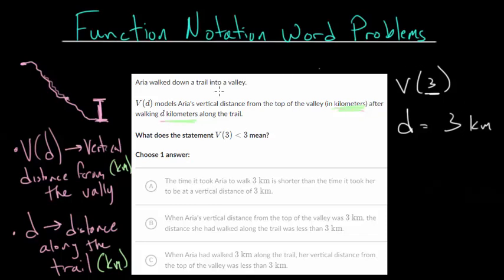So V(3) is basically representing the vertical distance after walking 3 kilometers. Or the vertical distance, let's say this is 3 kilometers there, then V(3) is whatever this height is, this vertical distance from the top of the valley. And they're saying that V(3) is less than 3. So that means that the vertical distance after walking these 3 kilometers is less than 3 kilometers. So this vertical up and down distance is at most 3 kilometers, but actually can't equal 3 kilometers.